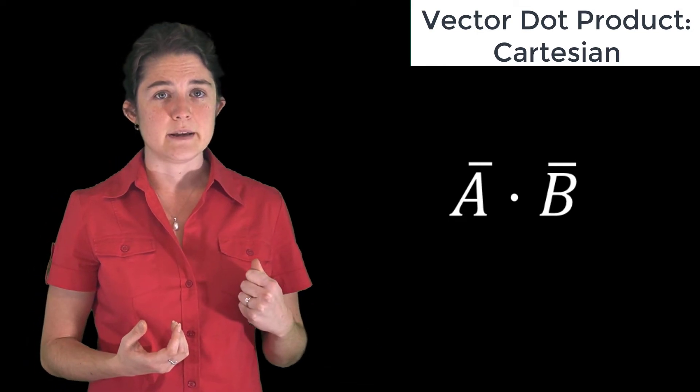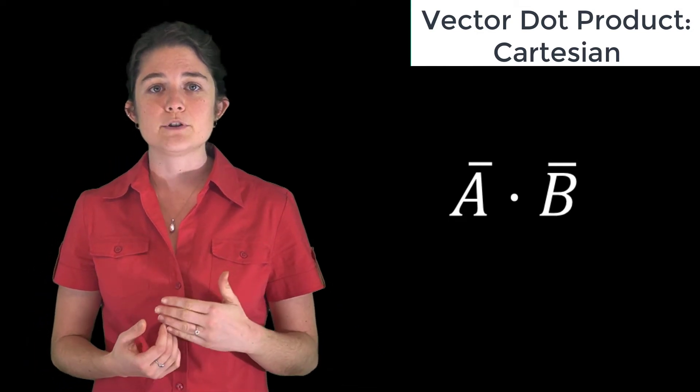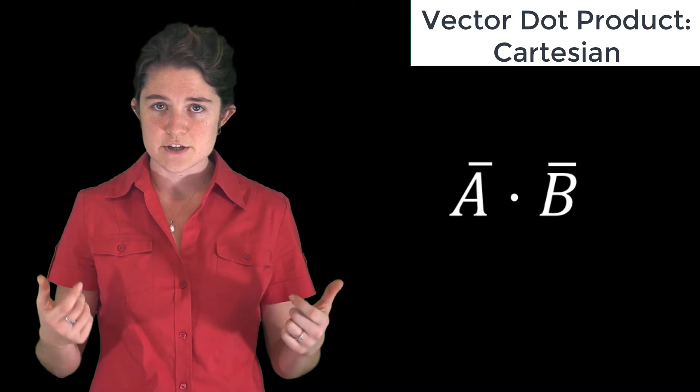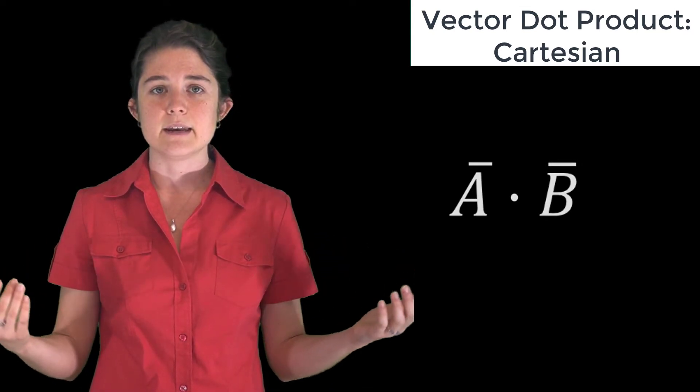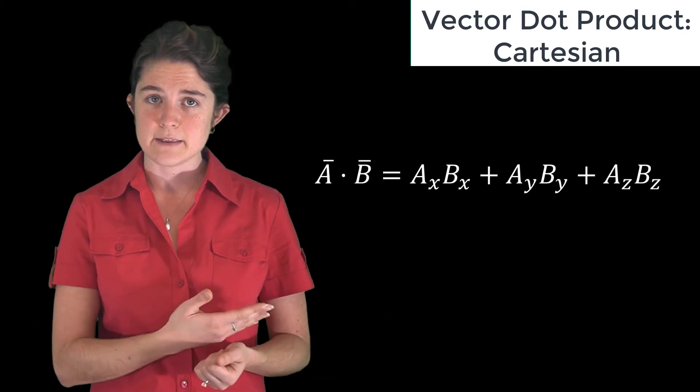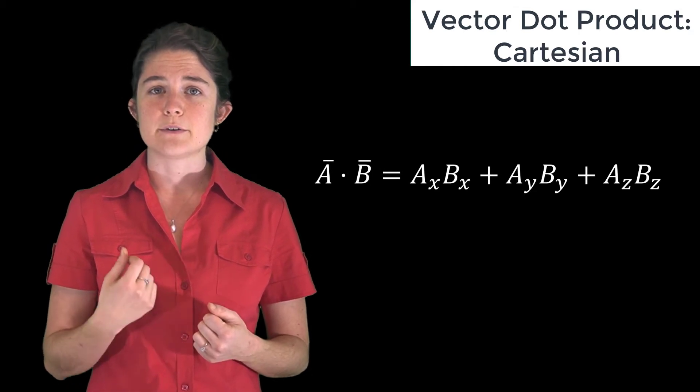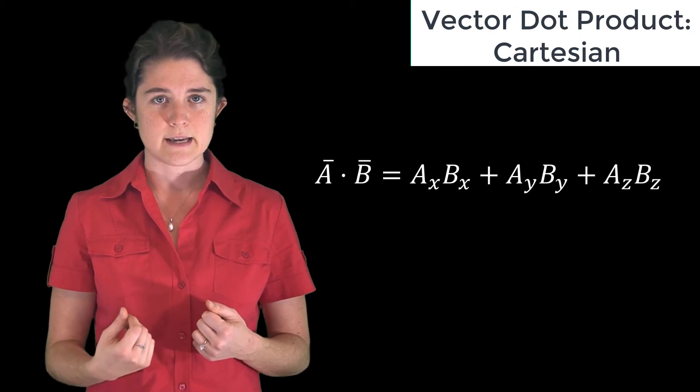Given two vectors a and b, the dot product may be found by multiplying the coefficients for each of those three components and then adding the three products. Please be careful to note that the result of a dot product is a scalar.